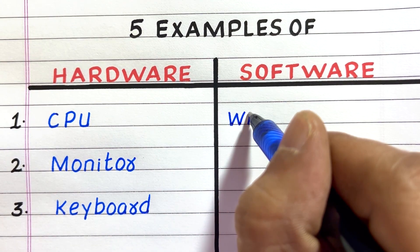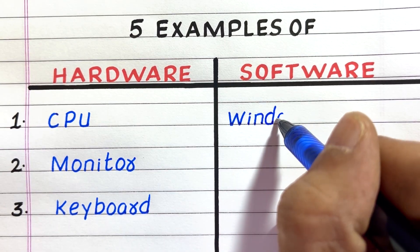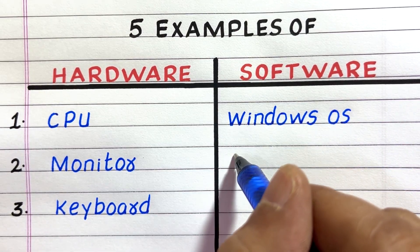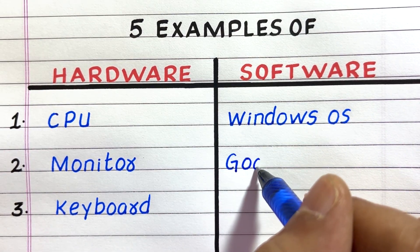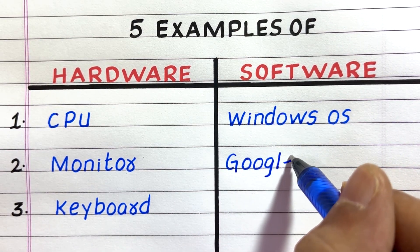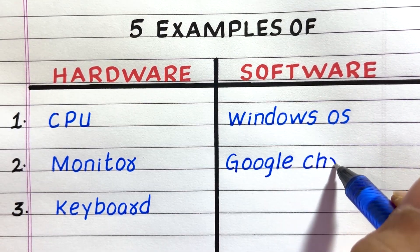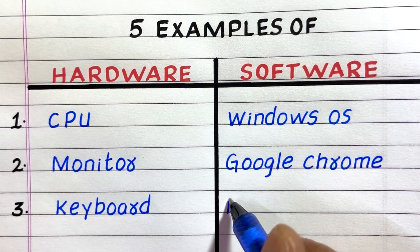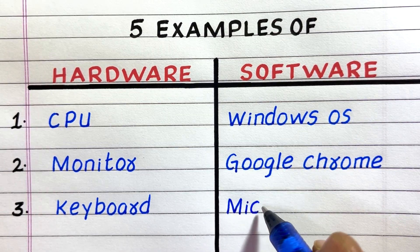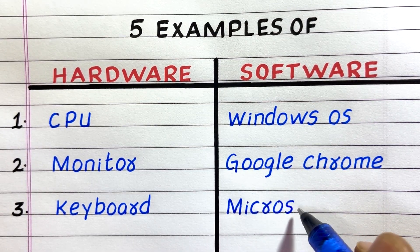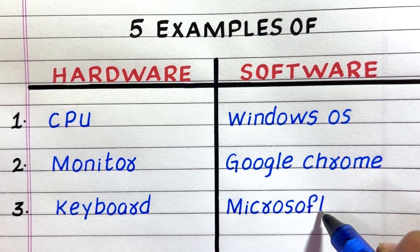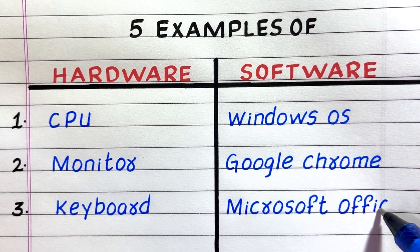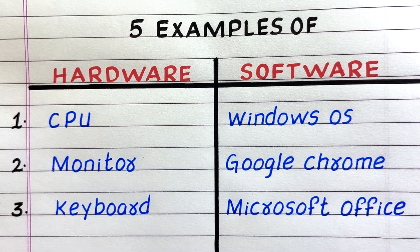The first example of software is Windows operating system, Windows OS. The second is Google Chrome. The third is Microsoft Office.